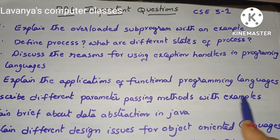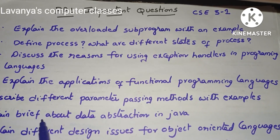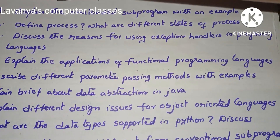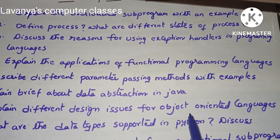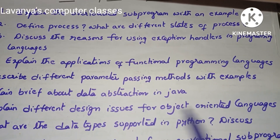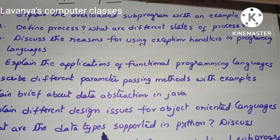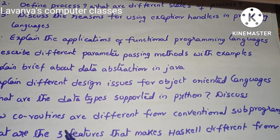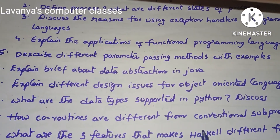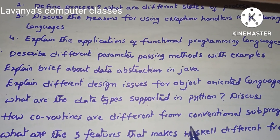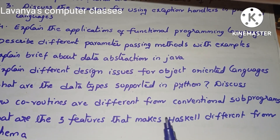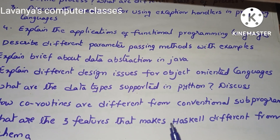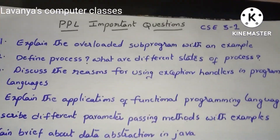Next: explain briefly about data abstraction in Java; explain different design issues for object-oriented languages; what are the data types supported in Python — discuss; how coroutines are different from conventional subprograms; and what are the three features that make Haskell different from Scheme.